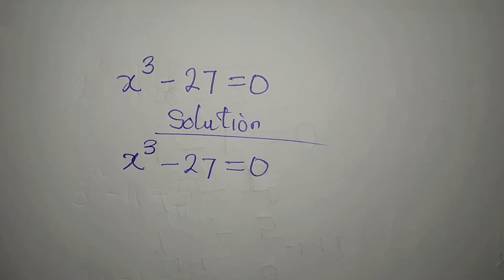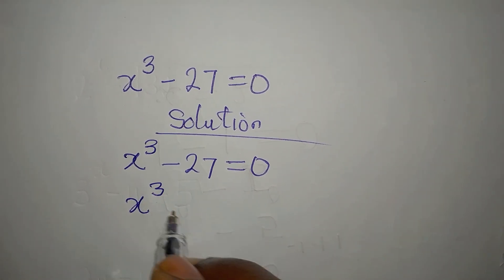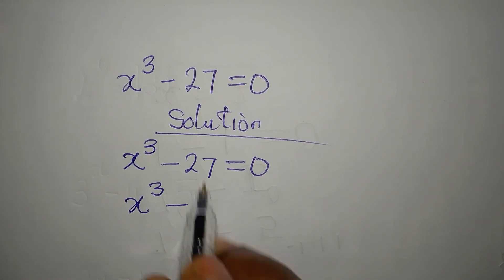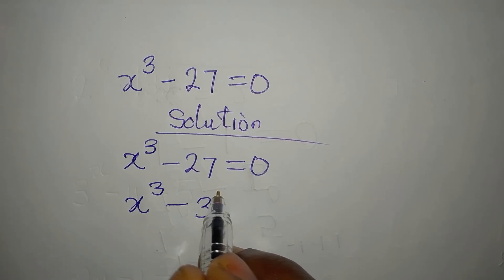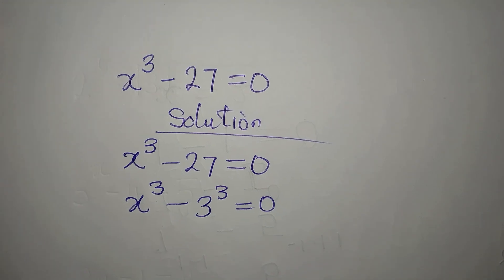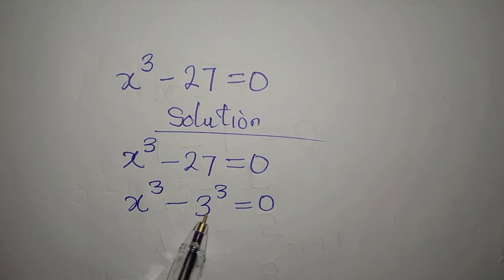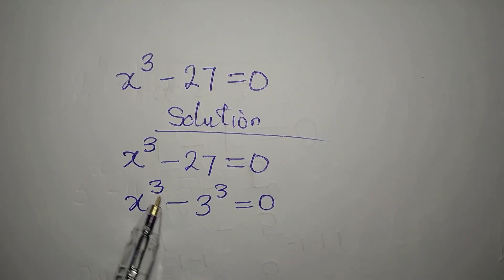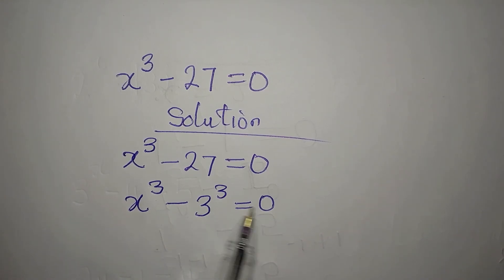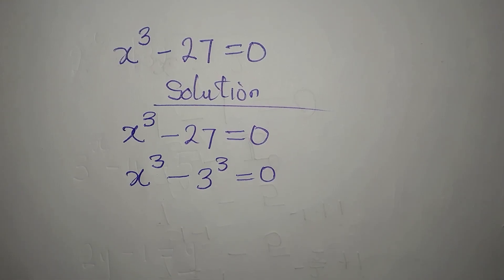So what do you do? This is x to the power of 3 minus 27, which is 3 to the power of 3, and this is equal to 0. From here, we can conclude that x should be equal to 3, so that 3 to the power of 3 minus 3 to the power of 3 will be 0. But if we make this conclusion, we will not get the 3 solutions.